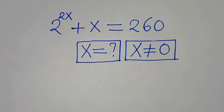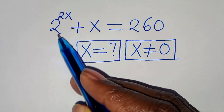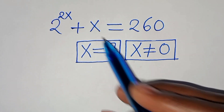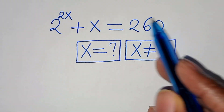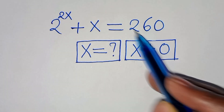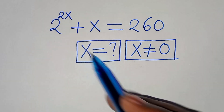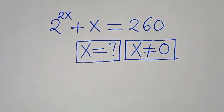Hello everyone, you're welcome to solve this nice algebra problem, which is 2 to the power of 2x plus x, this is equal to 260. So what is the value of x, given that x is not equal to 0?